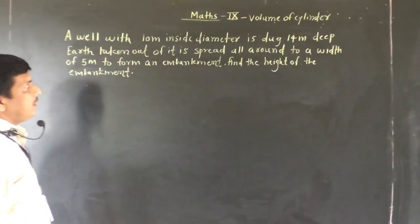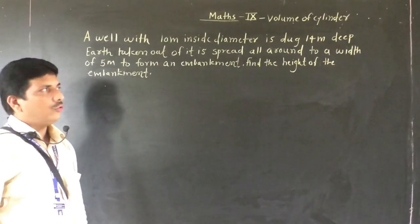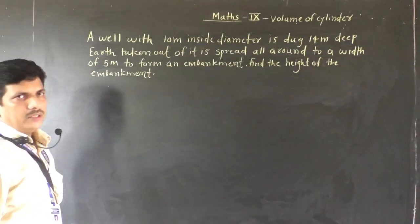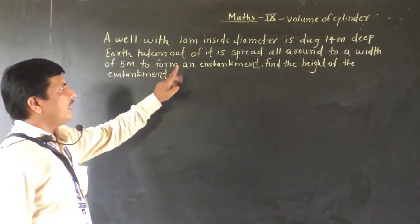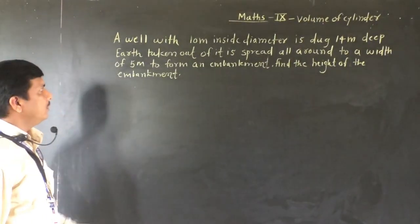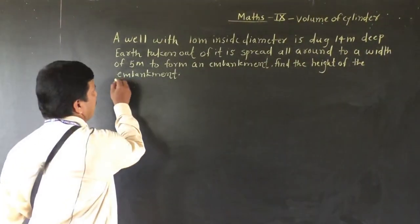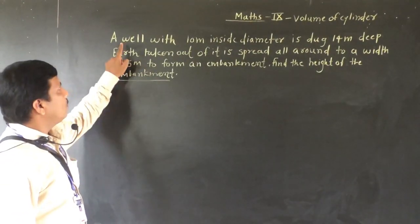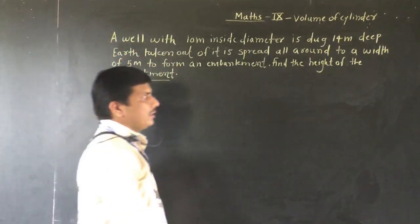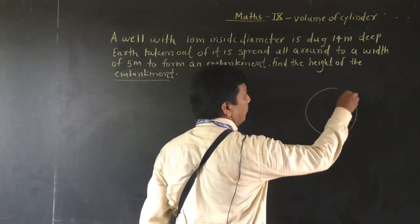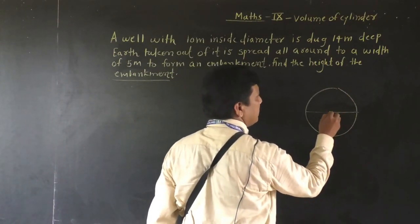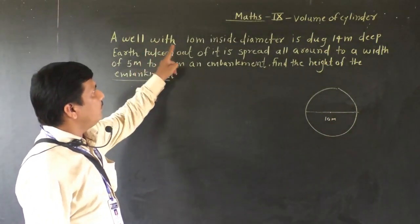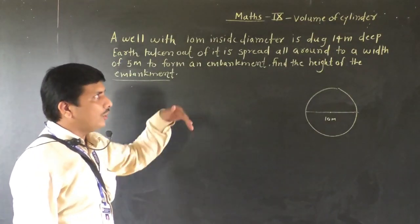A well with 10 meter inside diameter is 14 meters deep. The earth taken out of it is spread all around to a width of 5 meters to form an embankment. Find the height of the embankment. The diameter is 10 meters, so the radius is 5 meters. The height of the well is 14 meters.